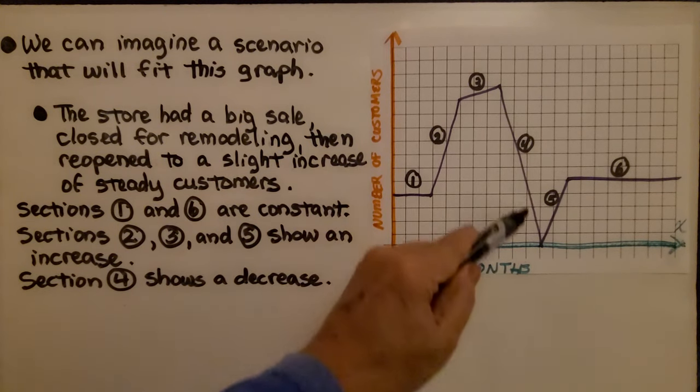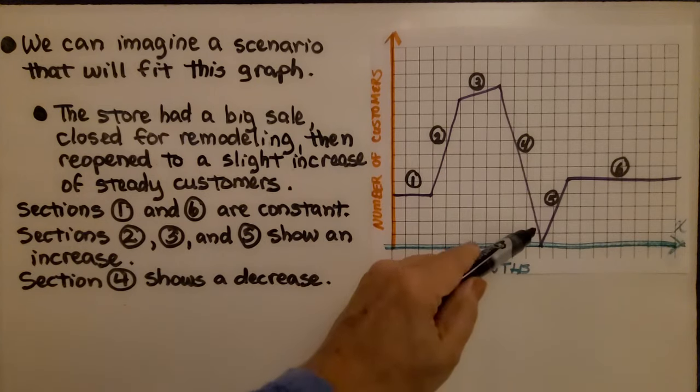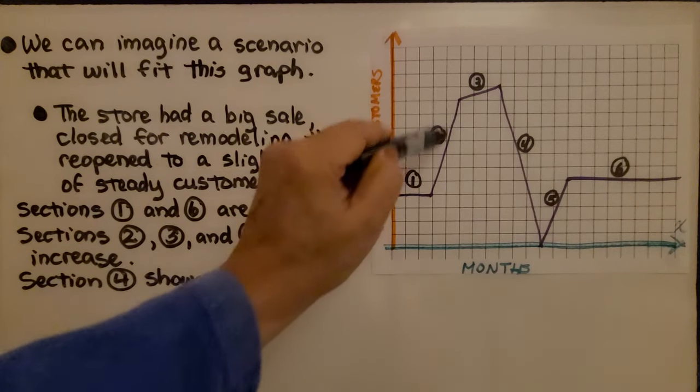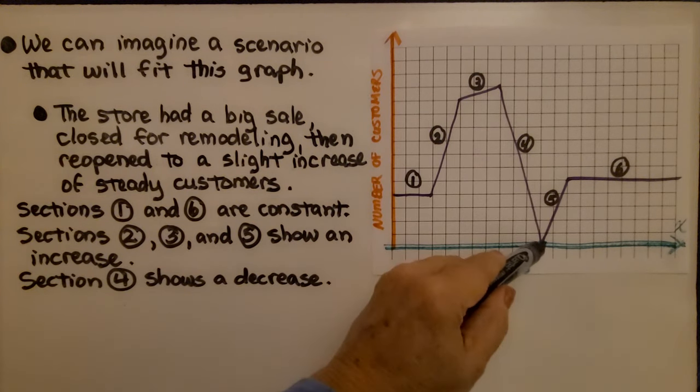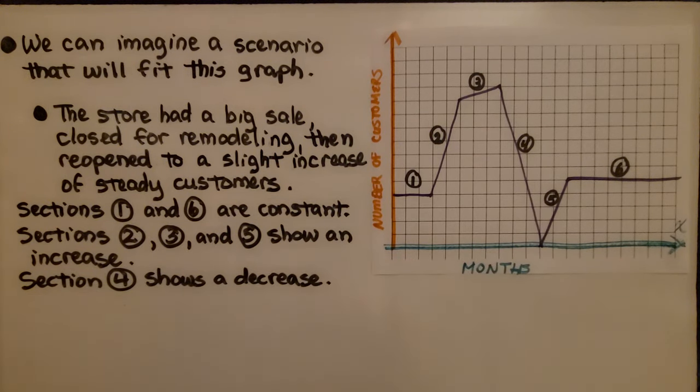Maybe the sales dropped here because as they had the sale, they got rid of a lot of their merchandise and had fewer things for people to buy until it gradually fell when they closed the store to remodel it. We could think of any situation that could fit this graph.